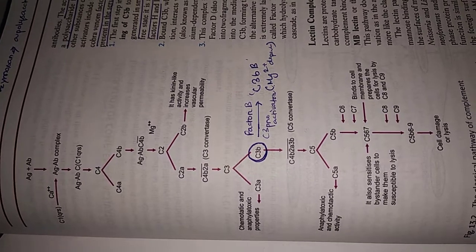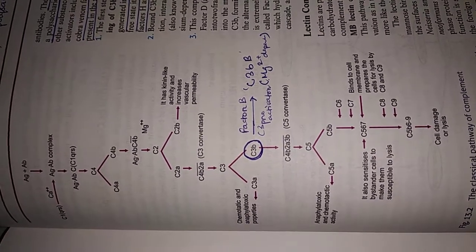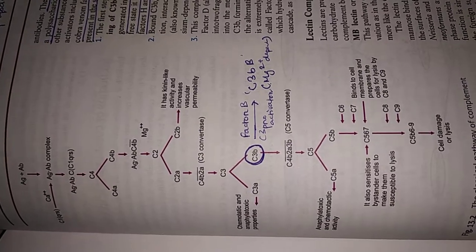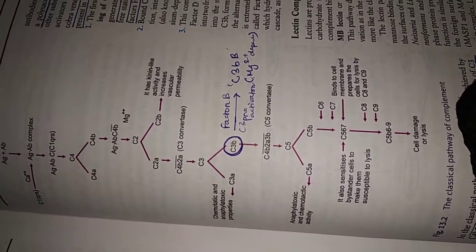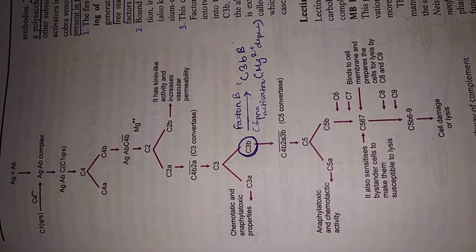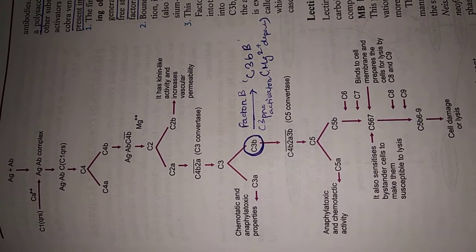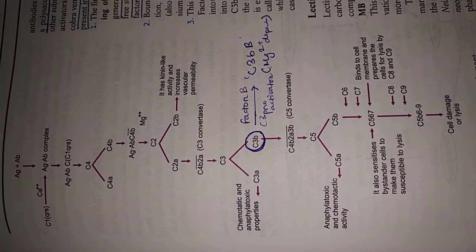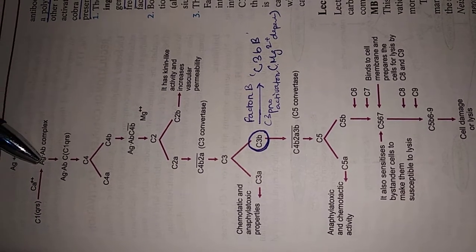In the flow chart, it is written antigen plus antibody, which means the antigen is bound by the antibody. These are only IgG and IgM. When the antigen-antibody complex is formed, it activates C1 — the first component to be activated. This C1 component has three parts: q, r, and s. Out of these three parts, only the q component binds to the antigen-antibody complex.